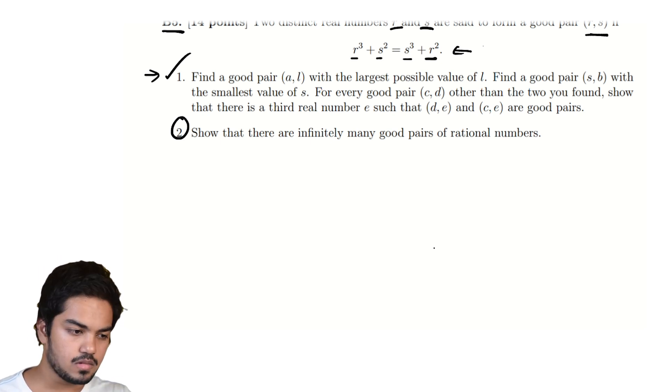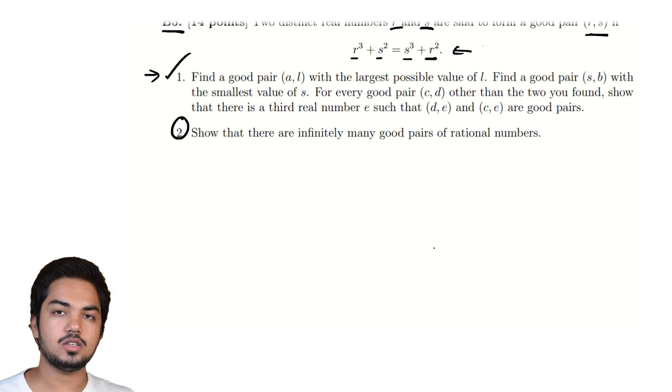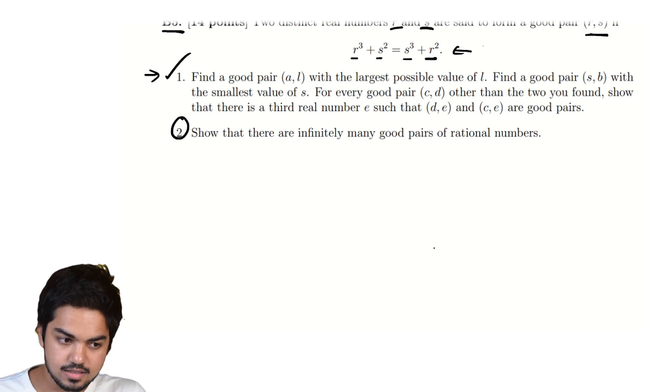The first thing that we'd want to do is to reinterpret what it means for a pair to be a good pair. And that's really where the first sort of trick is.